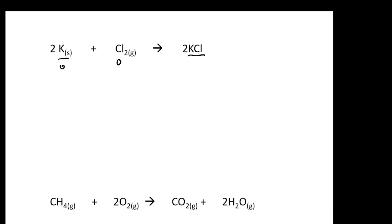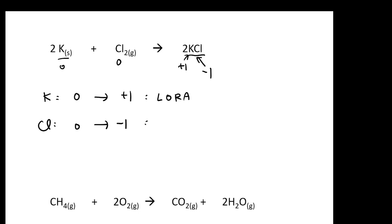Remember, potassium is in the 1A group on the periodic table — in a compound it is always plus one, always. Because the overall compound is neutral, chloride has to be negative one. So writing down the oxidation numbers: potassium goes from zero to plus one, and chloride goes from zero to negative one. Who is LoRa? Potassium — the increase in oxidation number means it undergoes oxidation and loses electrons. Chloride will be your GROC.